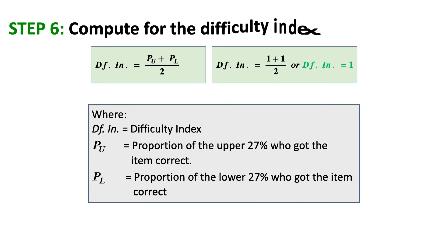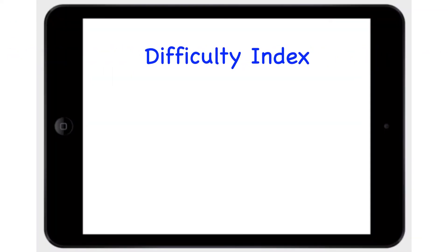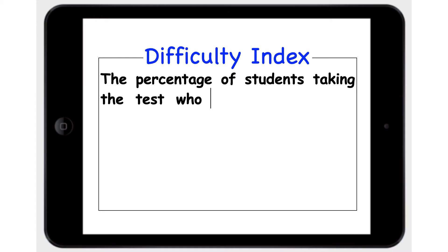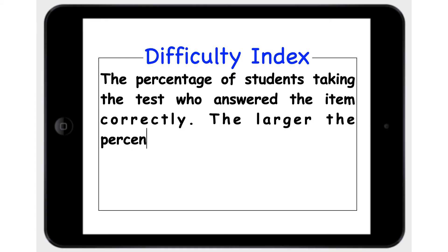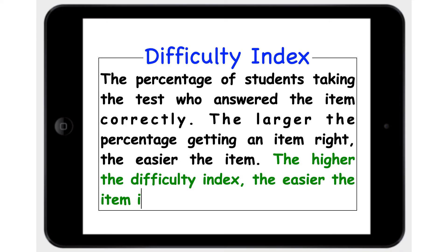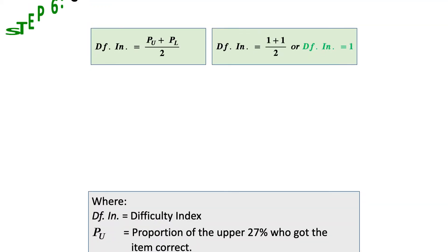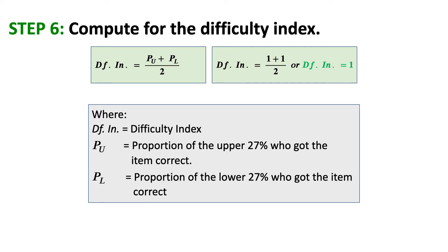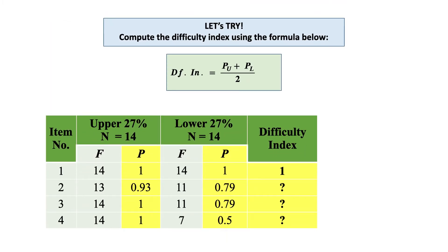Step 6: Compute for the difficulty index using the given formula. According to Wood (1960), the difficulty index is simply the percentage of students taking the test who answered the item correctly. The larger the percentage getting an item right, the easier the item. To compute item difficulty, get the sum of the proportions of the upper and lower group, then divide by 2. For example, 1 plus 1 equals 2, divided by 2, gives a difficulty index of 1 for that item.